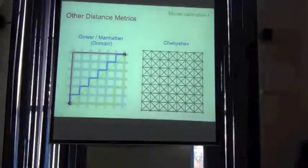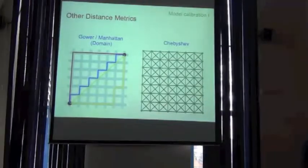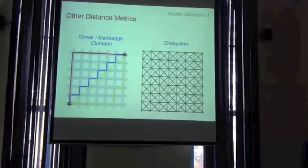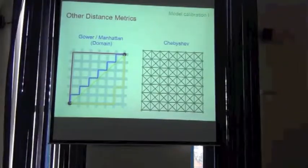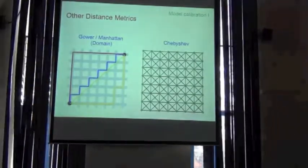And so it could be Euclidean. It could be Mahalanobis. It could be Gower distances. Different types of distances. But it all comes down to a class of approaches.